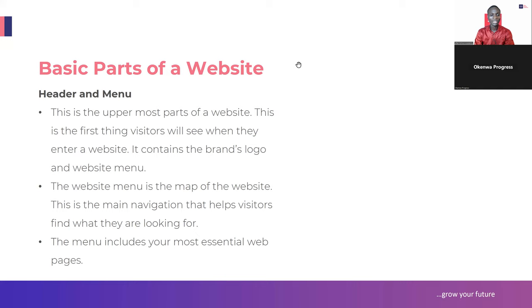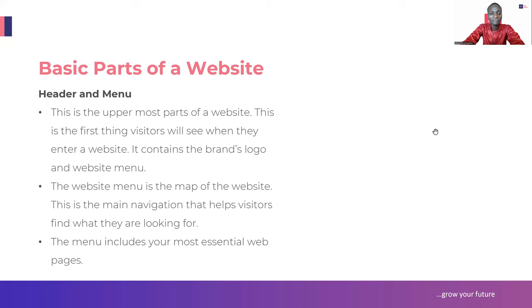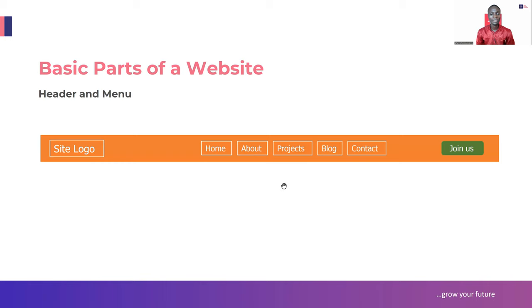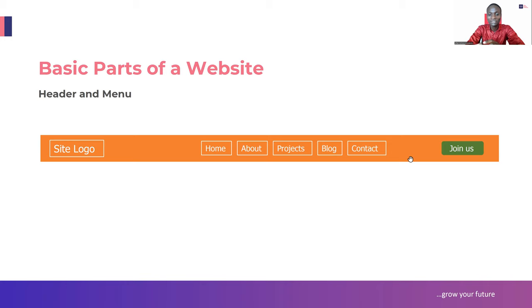The basic parts of the website - we are starting with the header and the menu. This is the uppermost part of the website, the first thing visitors will see when they enter a website. It contains the brand logo and the website menu. You have your site logo most times to your left-hand side, your navigation menu at the center or to the right, and a call to action button by your right-hand side.